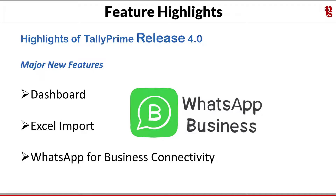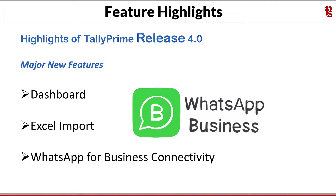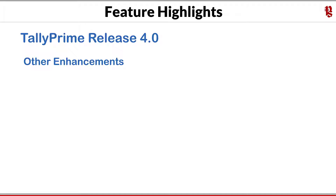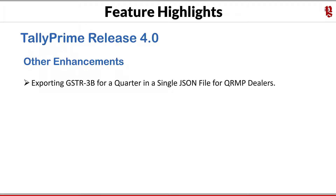Upcoming videos will cover in detail how to configure and enable WhatsApp for your company. Among other minor enhancements, you can now export GSTR 3B for a quarter in a single JSON file for QRMP dealers. QRMP stands for Quarterly Return filing and Monthly Payment of GST liability. The IFF (Invoice Furnishing Facility) had earlier allowed users to file tax invoices on a regular basis, and now with this release you can export the quarterly return in JSON and upload it directly on the portal.